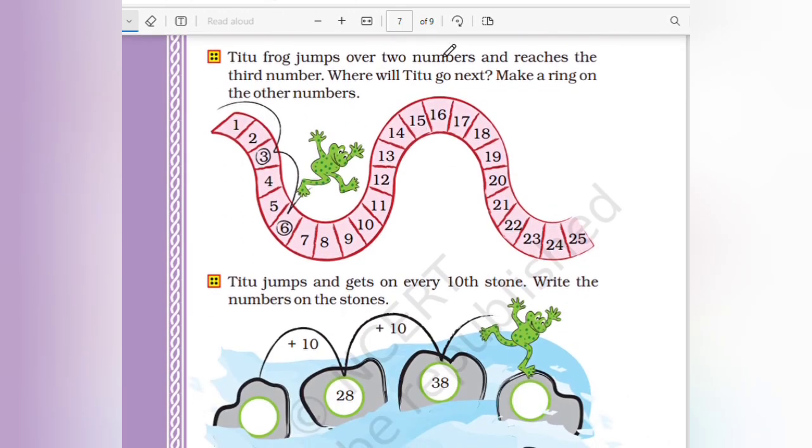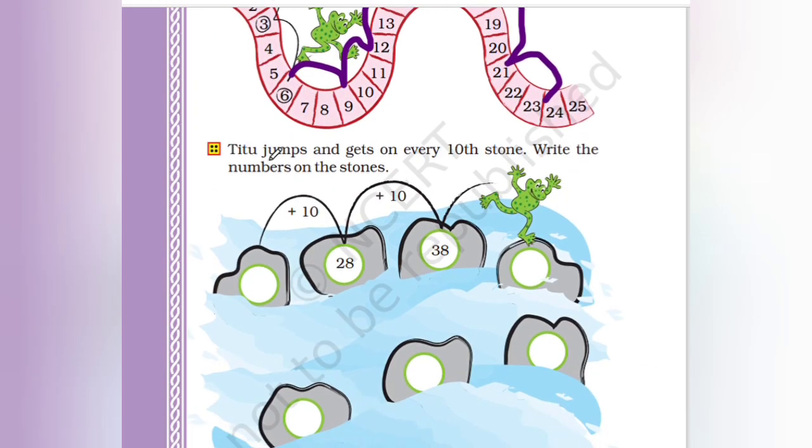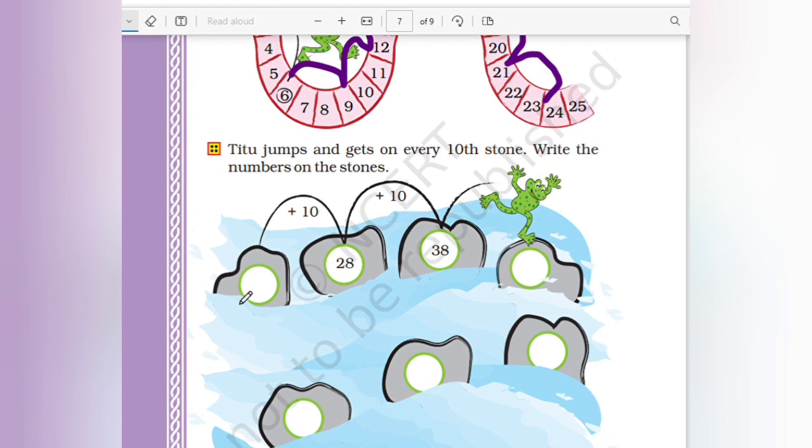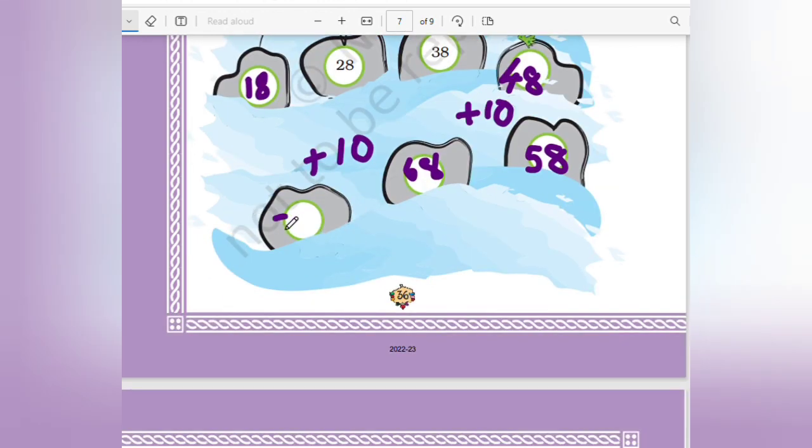T2 frog jumps two numbers and reaches the third number. Where will T2 go next? Make a ring on the other numbers. T2 jumps to that third one. To get on every tenth stone, write the numbers of the stones. Here it is 18 plus 10 is 28, plus 10 is 38, plus 10 is 48, plus 10 is 58, plus 10 is 68, plus 10. 48, 58, 68, here it is 78.